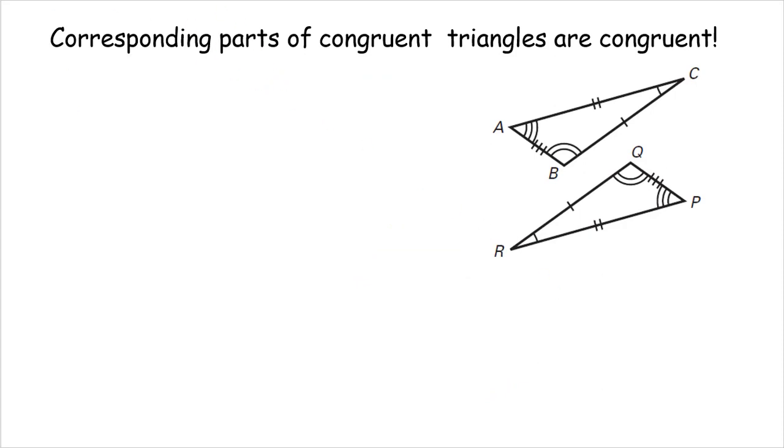Corresponding parts - we're going to be using this in proofs a lot. Corresponding parts of congruent triangles are congruent, CPCTC. Triangle ABC is congruent to triangle PQR. I started with angle P marked with 3, then went to 2, then to 1. So I can tell right away angle A is congruent to P, B is congruent to Q, and C is congruent to R.